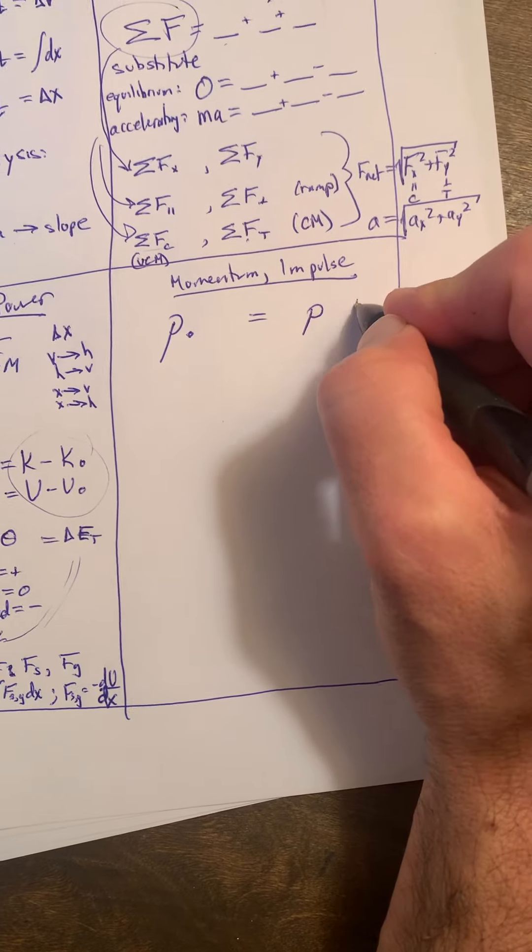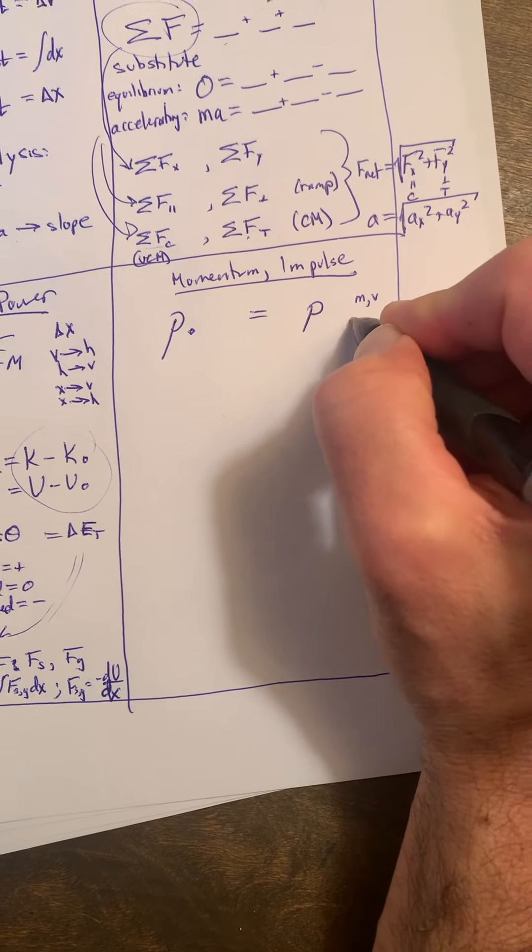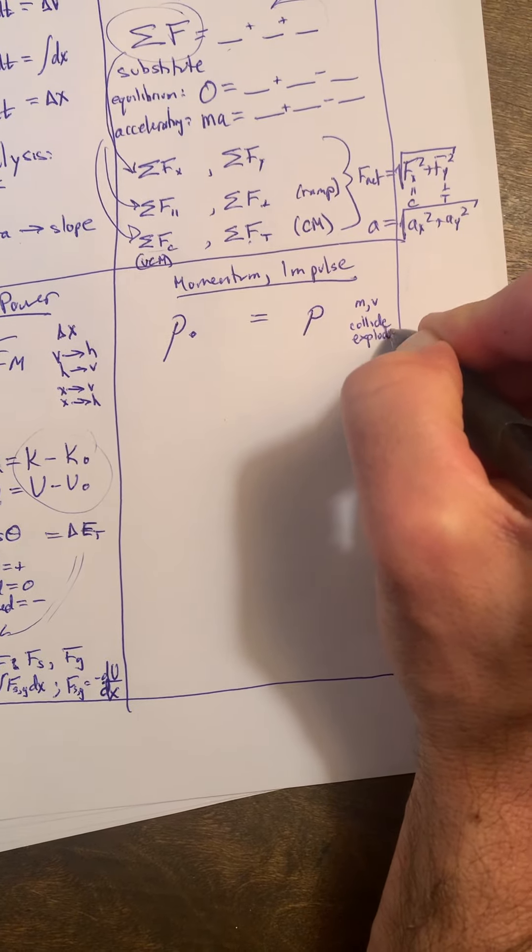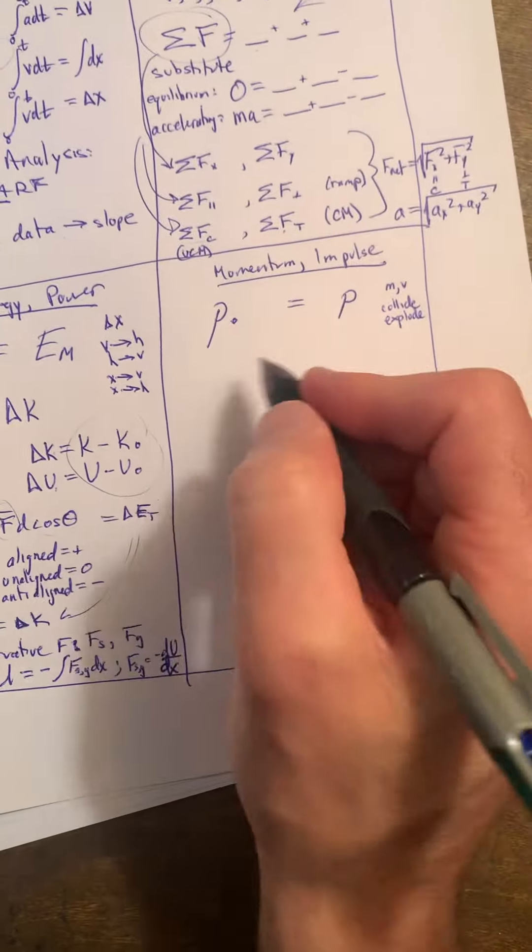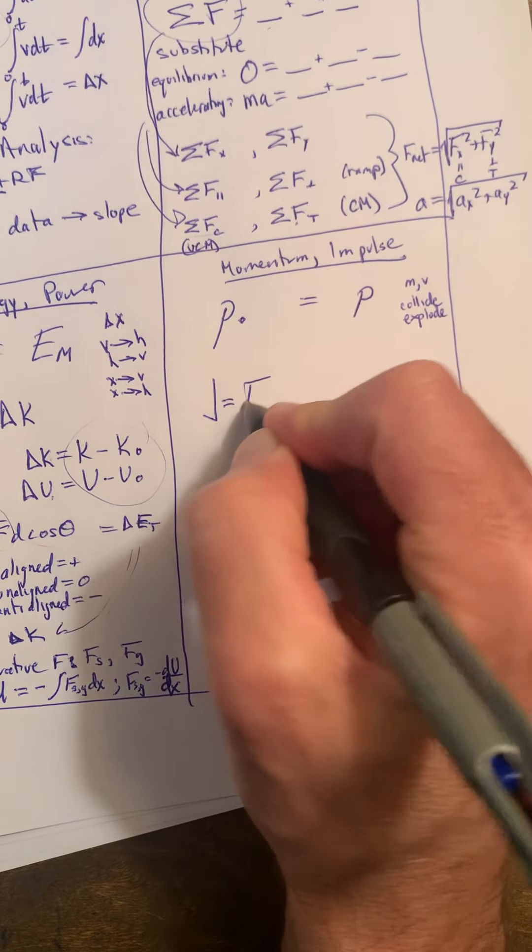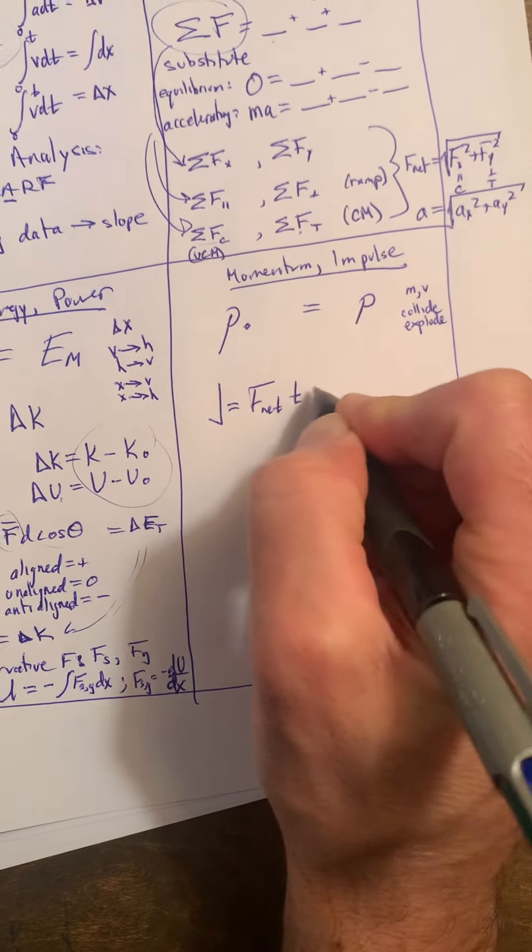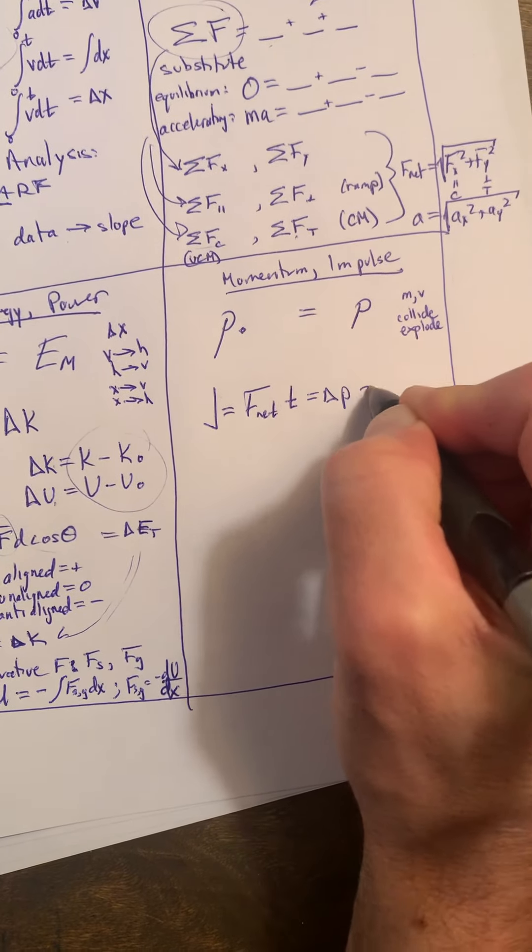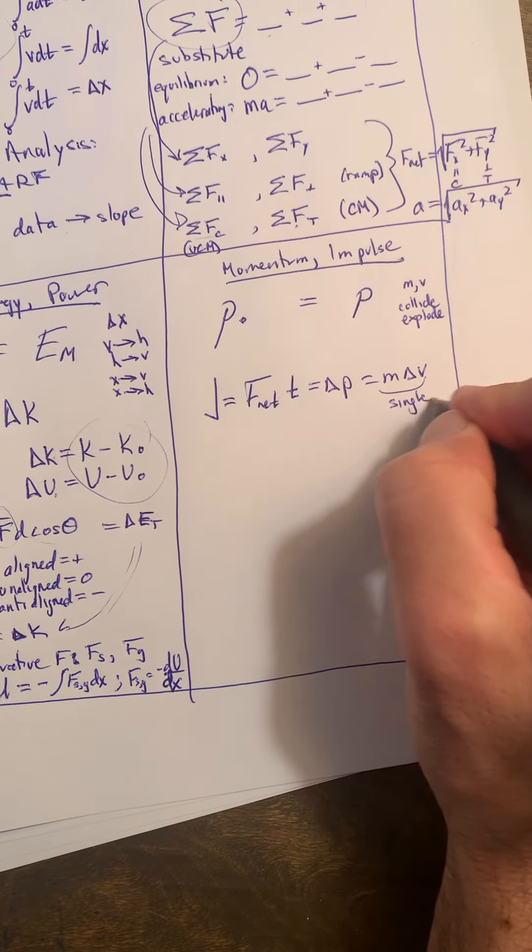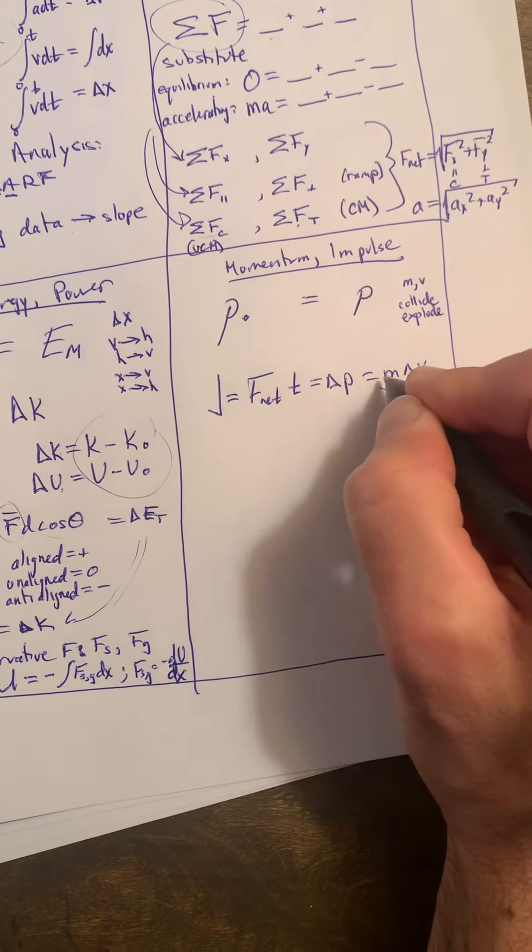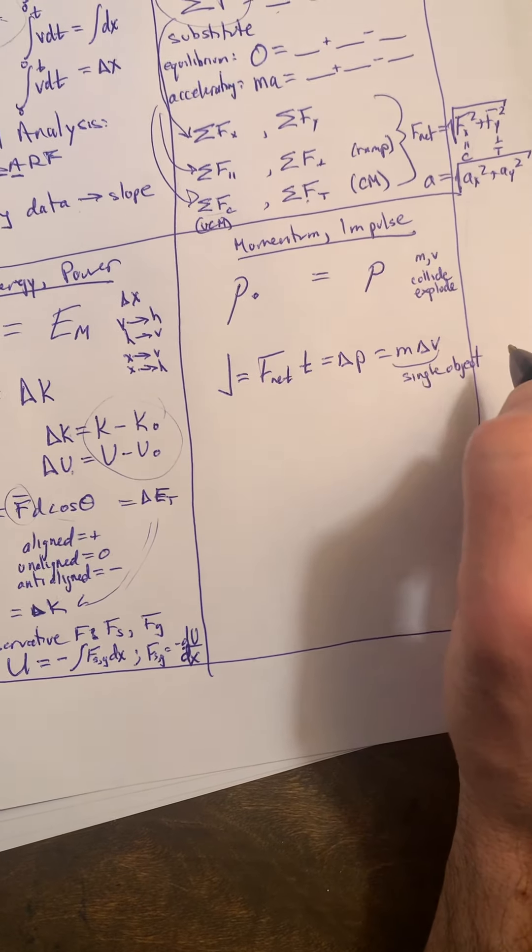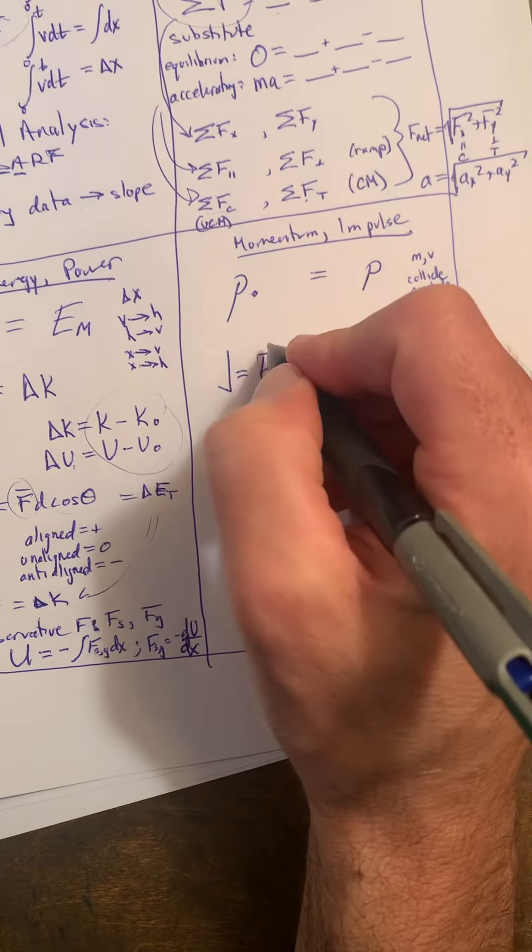This one is commonly when you have masses and velocities and you either have some sort of collision or explosion, something like that. It's pretty straightforward to use, same as it was last year. We had this equation from last year: J is Fnet·t, Δp is m·Δv. Now this m·Δv is not technically correct, this is for a single object, because really it should be Δ(m·v). But most of our objects, you'll focus on single objects when doing this.